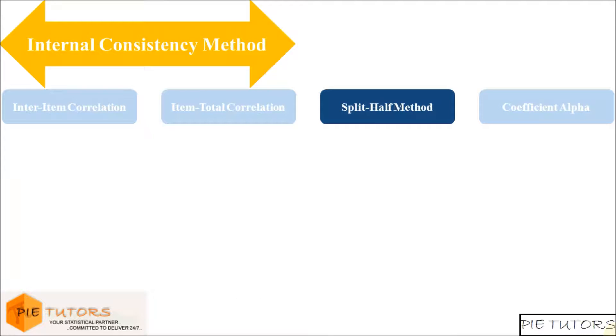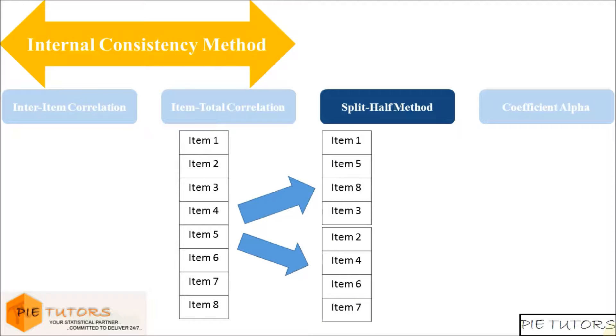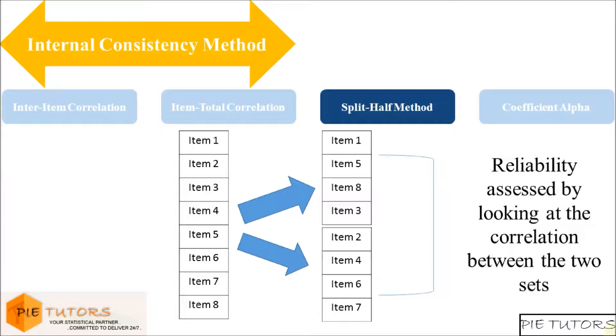Split half method is another way to determine internal consistency of a measure. We can split the measure in two halves so that there are two sets of questions. We can then see if the two sub-scales are highly correlated.